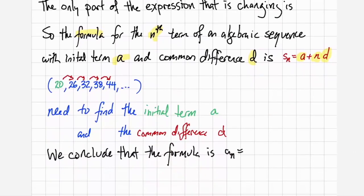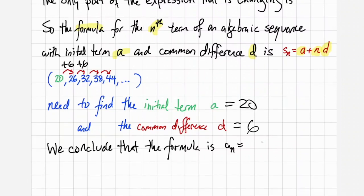As an example let's look at 20 26 32 etc. The initial term is 20. The common difference is 6 and so a formula for a sub n would be 20 plus n times 6 which is equivalent to writing 20 plus 6n.